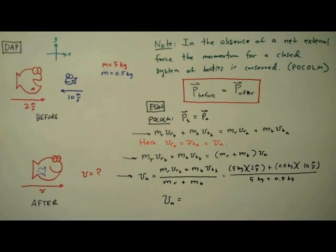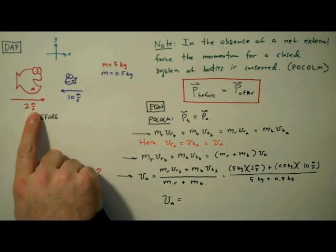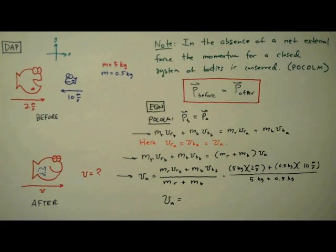What? 2.7? Hold on a second. Nope. Calculator says 2.7. But it's not possible for the velocity after the collision to be greater than it was before. I see our mistake.